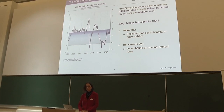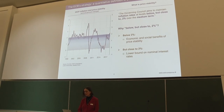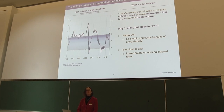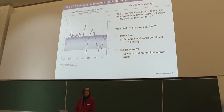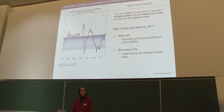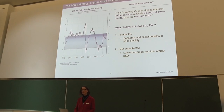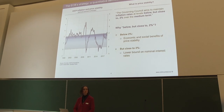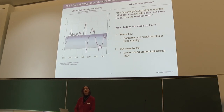The ECB concretizes the price stability objective with a quantitative definition: the Governing Council aims to maintain inflation at levels below but close to two percent over the medium term. Below two percent because high inflation causes money to lose its value and typically increases inflation volatility. Close to two percent to avoid deflation and to preserve leeway for monetary policy in adjusting interest rates in response to economic contractions.